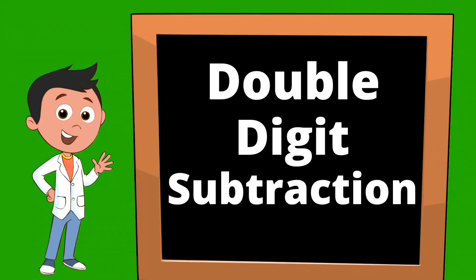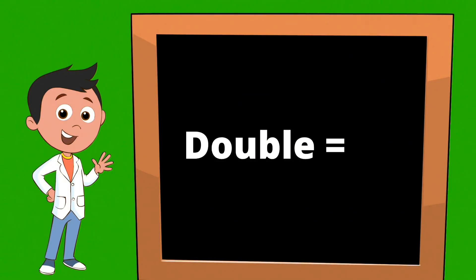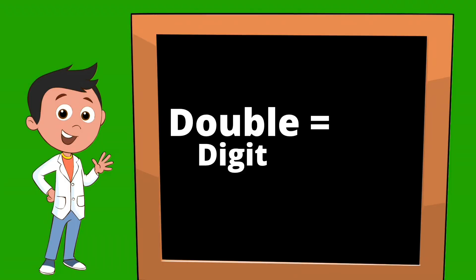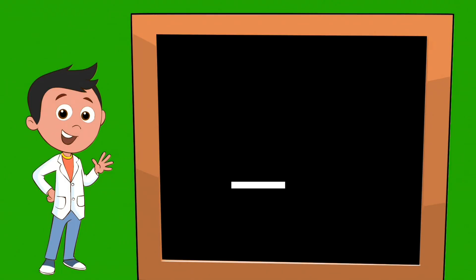Today, we will be learning about double-digit subtraction. What is a double-digit number? Double means two. Double-digit means two digits. So instead of just one number, double-digit numbers have two numbers.